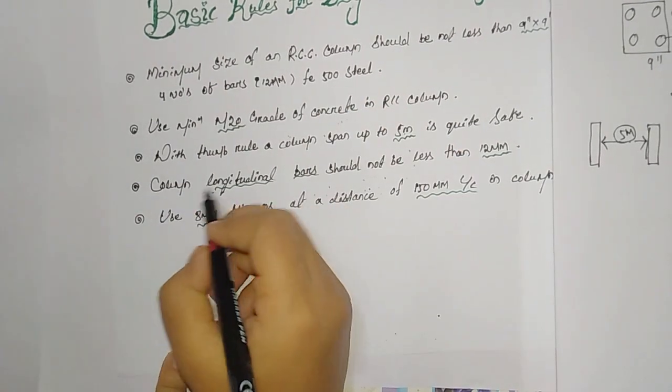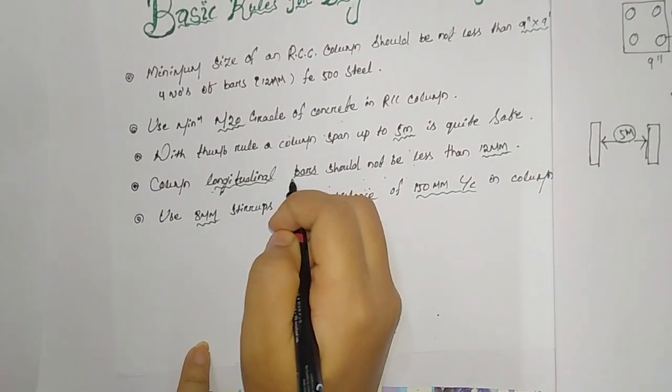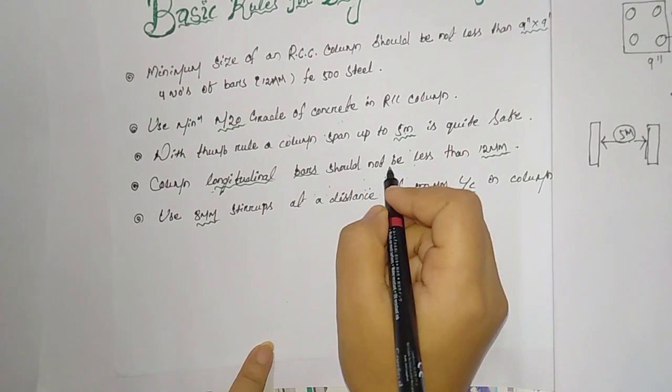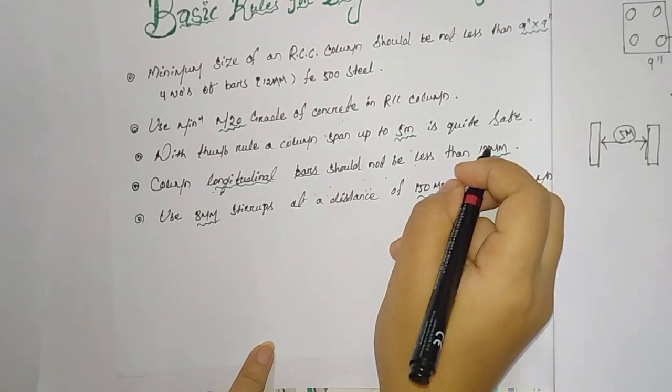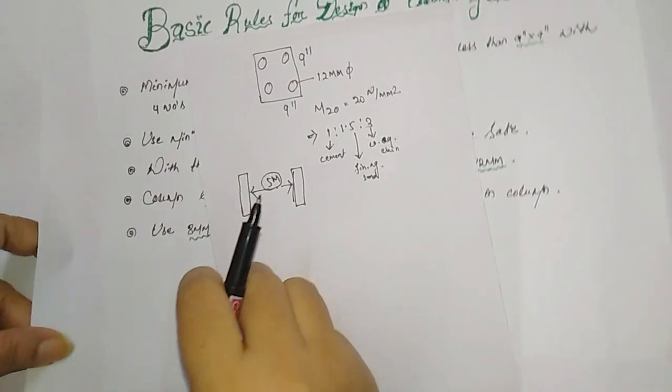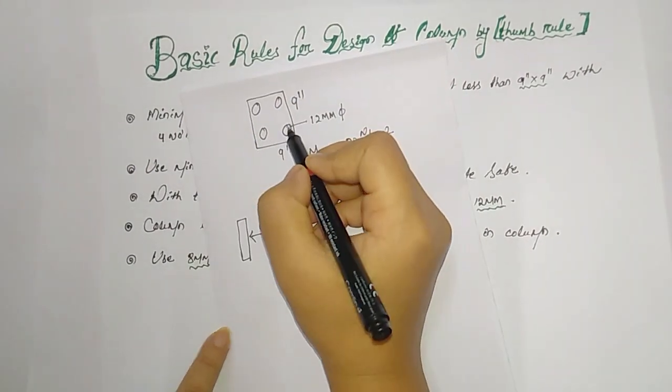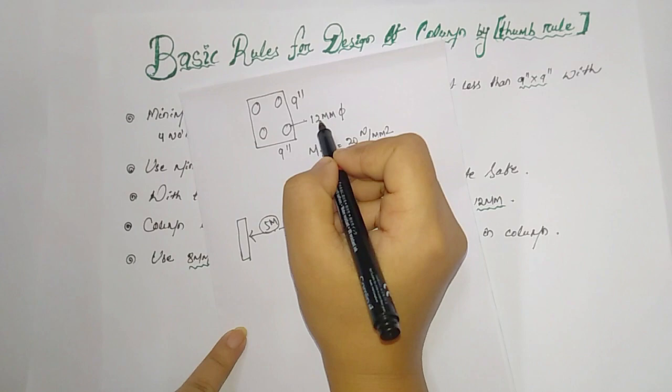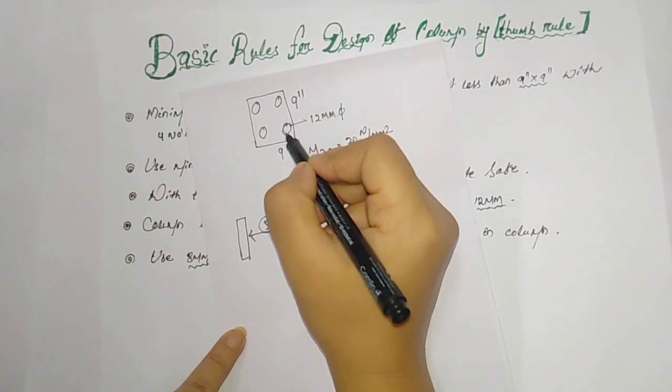Number four: column longitudinal bars should not be less than 12mm, as I described in the first point. The bars diameter should be 12mm each.